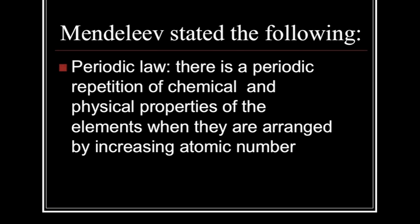The Periodic Law states there is a periodic repetition of chemical and physical properties of elements when they are arranged in increasing atomic number. Mendeleev's Periodic Table was arranged by atomic masses, and it wasn't until later that we get this periodic law that says it's increasing by the atomic number.